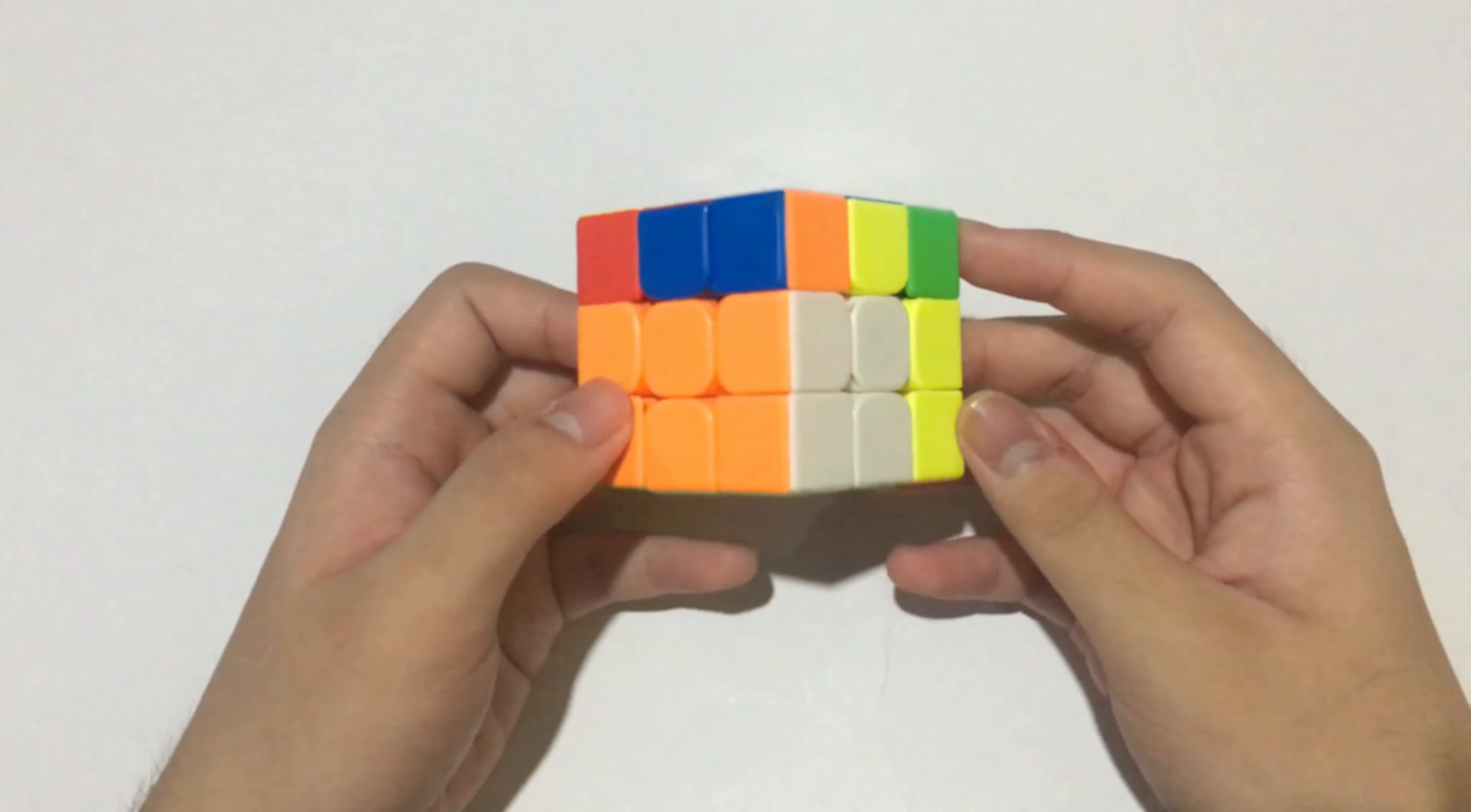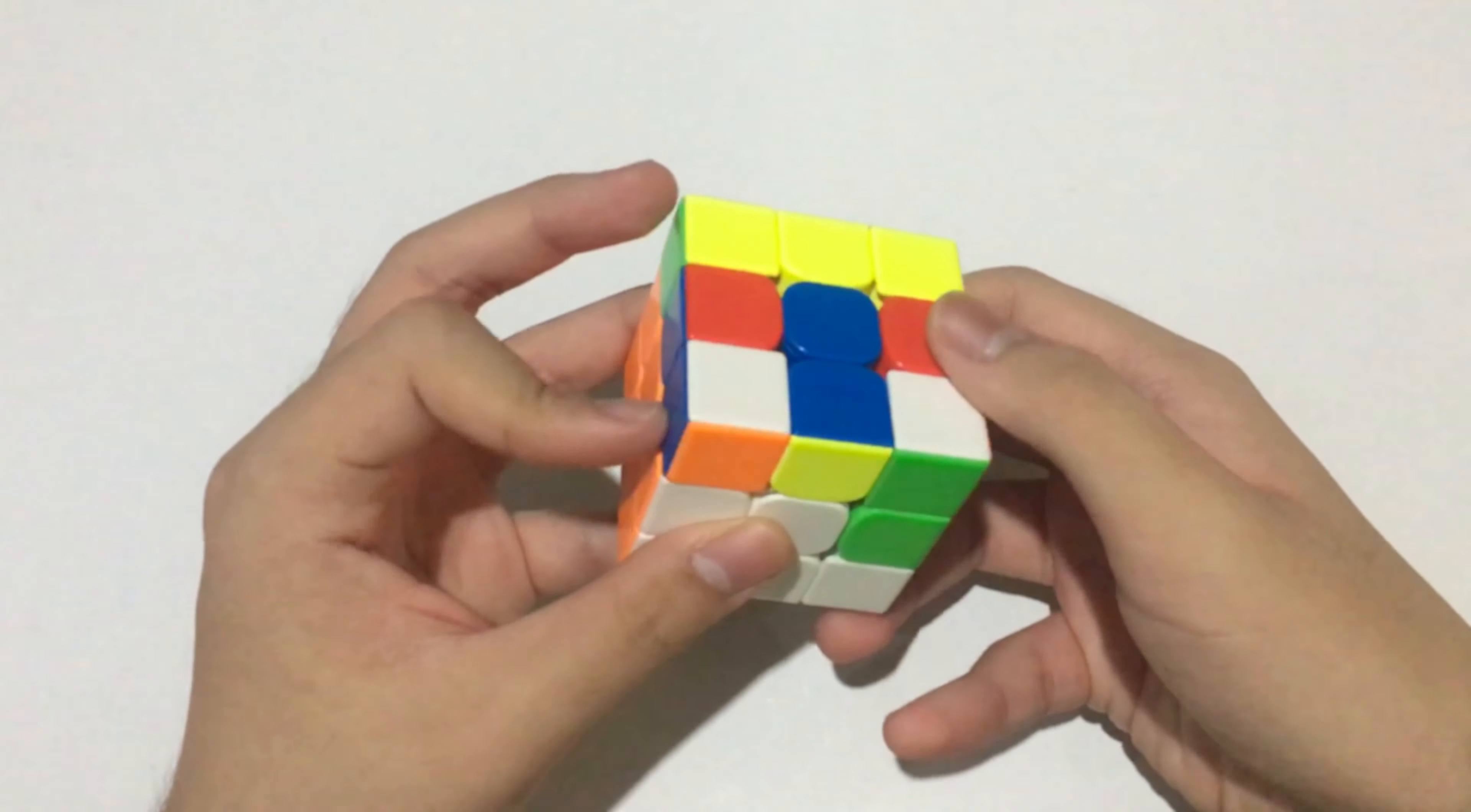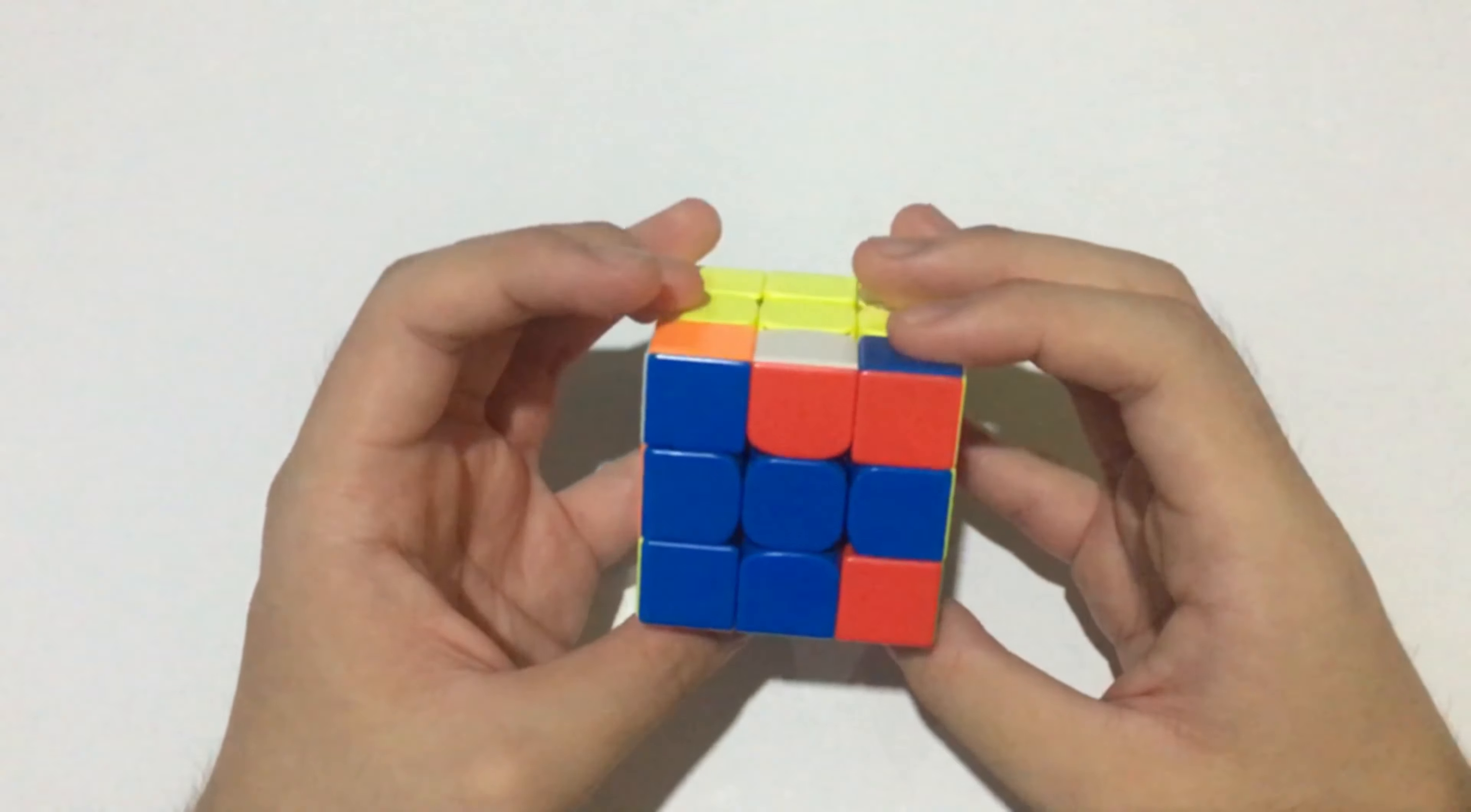This isn't a good situation because we solved the first two F2L pairs on the front. But luckily, I saw this corner and this edge, so I rotated this way and inserted this into the back. But sadly, I got the worst F2L case. I did U2 and split this pair up like that.